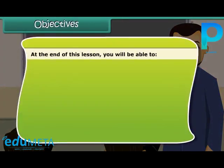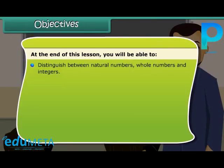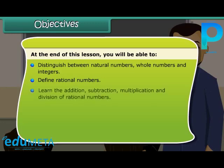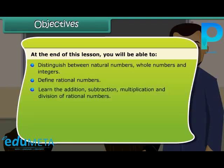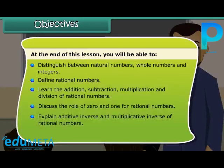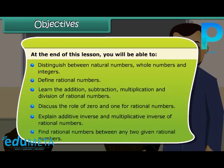At the end of this lesson, you will be able to: distinguish between natural numbers, whole numbers and integers; define rational numbers; learn the addition, subtraction, multiplication and division of rational numbers; discuss the role of 0 and 1 for rational numbers; explain additive inverse and multiplicative inverse of rational numbers; and find rational numbers between any two given rational numbers.